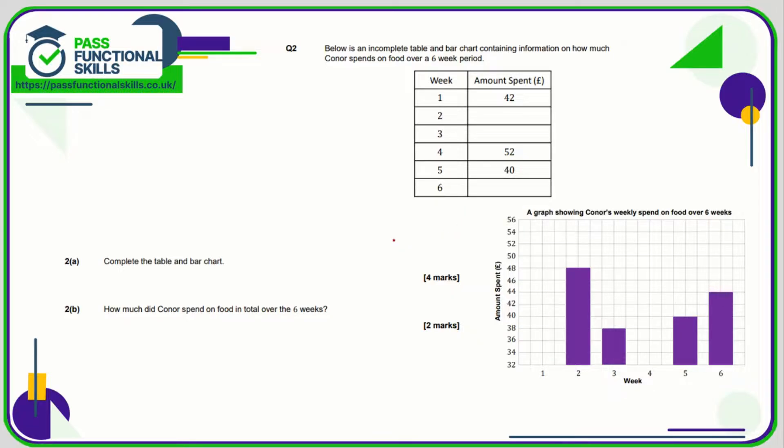Question two, we need to complete the table and bar chart. So first of all, in week two we can see we're going up to 48. In week three we can see we're going up to 38. Week five is 40, that's already included, and six is 44.